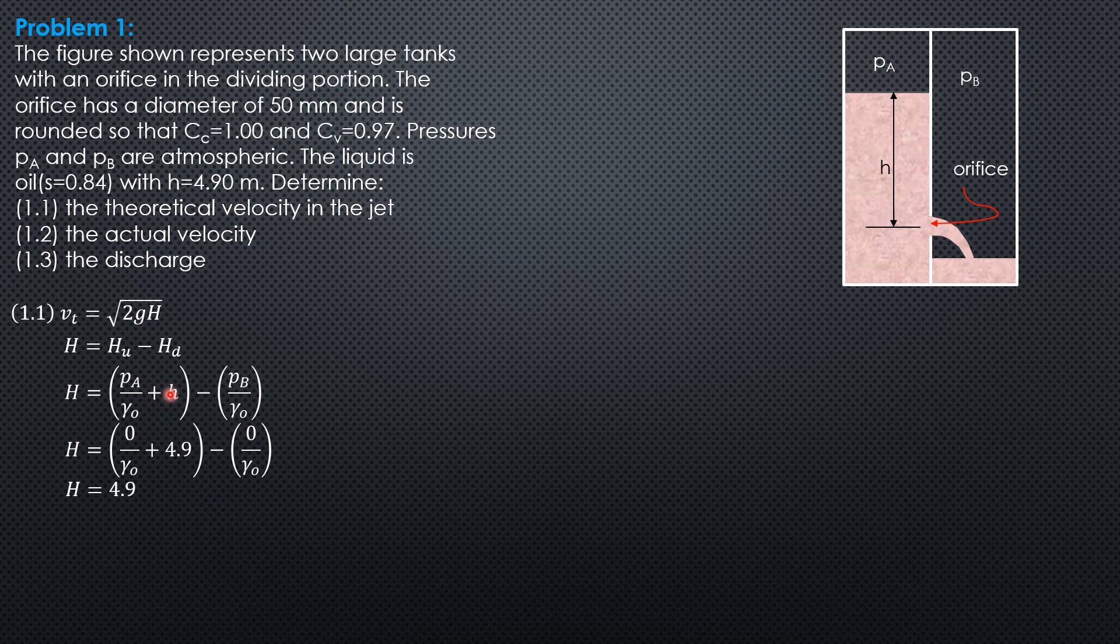So substitute into the formula. The theoretical velocity is square root of 2 times 9.81 times 4.9.